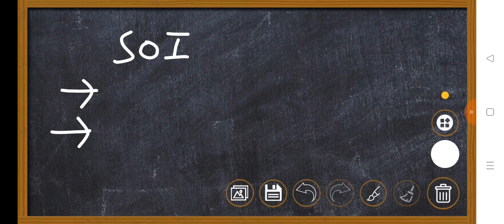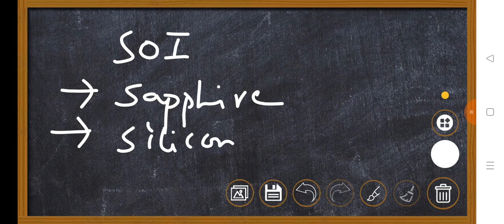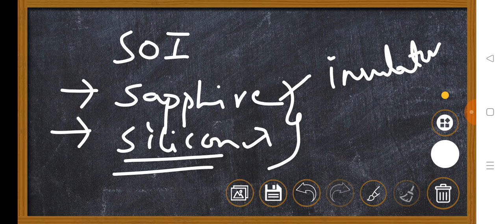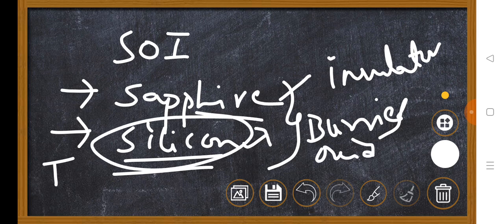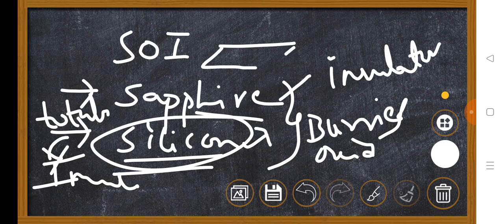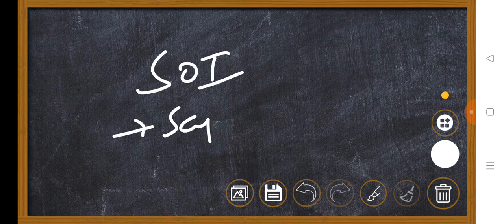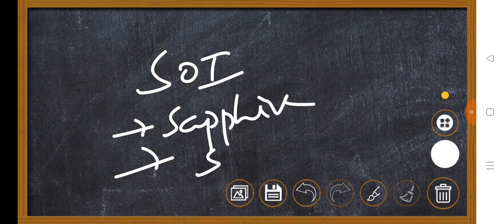SOI technology can be implemented in two processes: one is the sapphire substrate process, and another is the silicon substrate process. You can use sapphire directly as an insulator. With the silicon substrate process, I am not just doing oxidation — I am doing buried oxidation. Because of this buried oxidation, the entire substrate turns totally into an insulator, not only at the top but throughout.